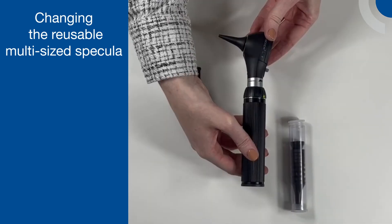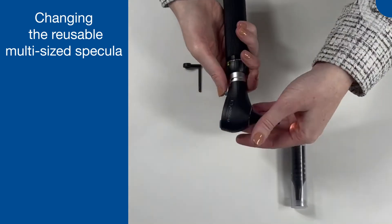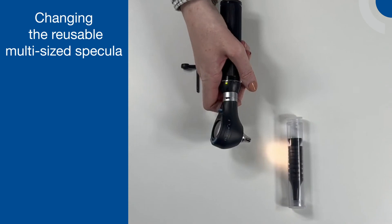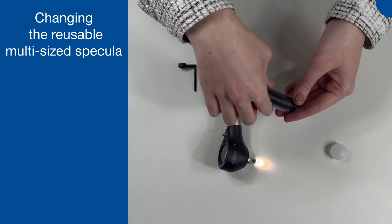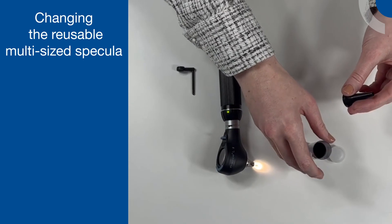To eject the specular, press down on the blue button beneath the swivel lens. You will hear a slight rattle from the otoscope head when there is no specular attached. This is normal and means that the spec eject feature is not engaged.